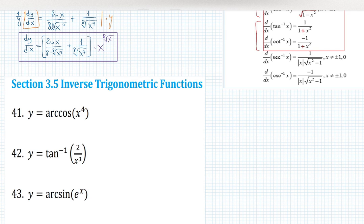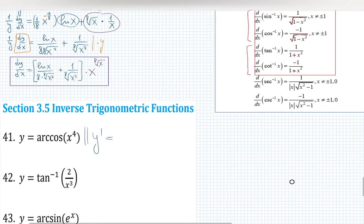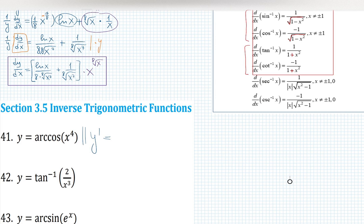Arccosine x to the 4. If I want to differentiate that, y prime becomes cos⁻¹. So again this is not 1 over cosine. cos⁻¹ is a notation for arccosine. Derivative of arccosine is negative 1 over square root of 1 minus input squared.